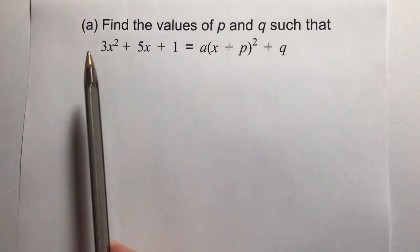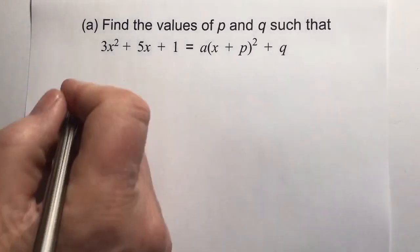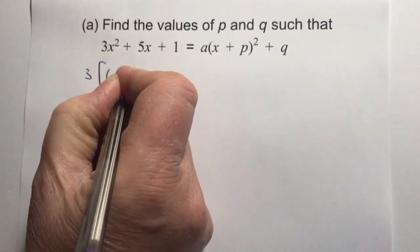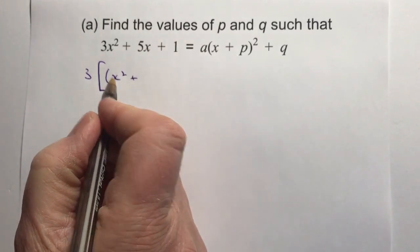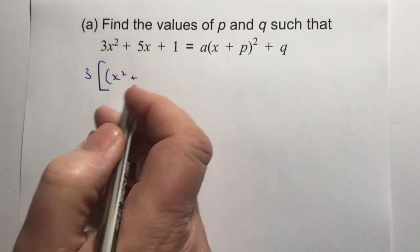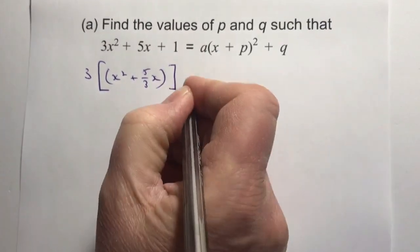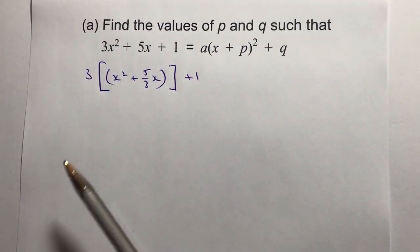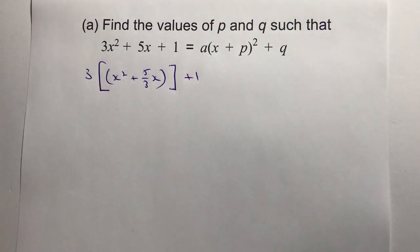What I'll do is factorise these first two terms to the value of 3. I'm just going to write big square brackets. This time x squared is fine, but I've got 5 — well, 5 divided by 3 I can write as 5 over 3 x. I've done nothing other than factorise the first two terms to the value of 3. So let's have a look at actually completing the square.